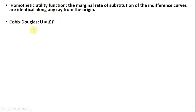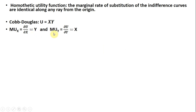Let's take an example of a Cobb-Douglas utility function. The marginal utility of good x is y, and the marginal utility of y is x, forming the marginal rate of substitution. We see the marginal rate of substitution is y divided by x.